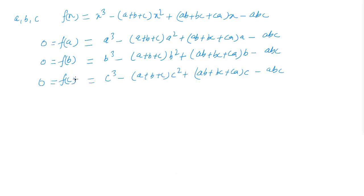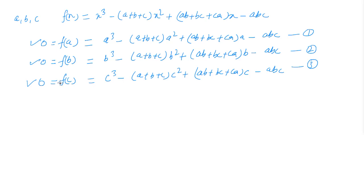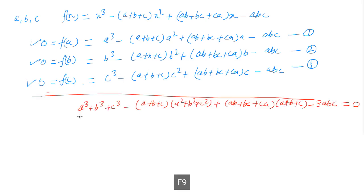Similarly, f(c) = c³ - (a+b+c)c² + (ab+bc+ca)c - abc = 0. Since a, b, and c are zeros of this polynomial, f(a)=0, f(b)=0, and f(c)=0. Calling these equation 1, equation 2, and equation 3, by adding all three equations, we get: a³+b³+c³ - (a+b+c)(a²+b²+c²) + ...